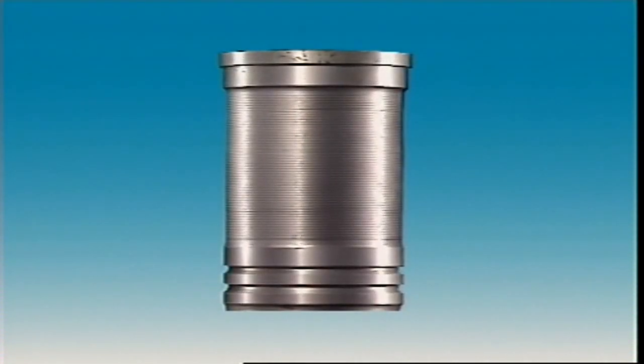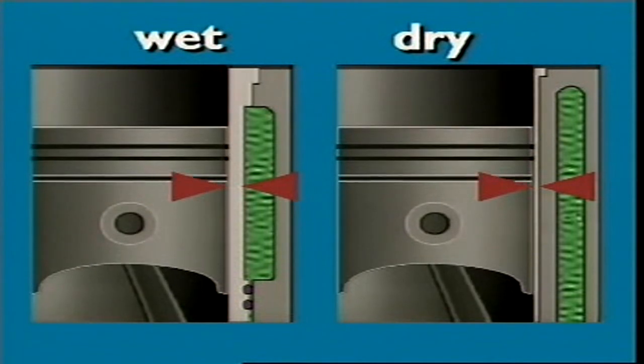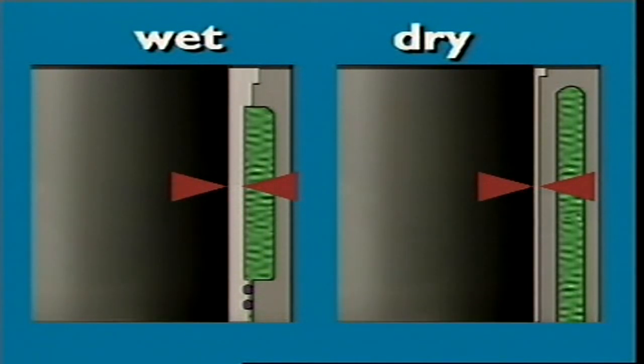The walls on wet sleeves are thicker than on dry sleeves. They don't have the same support from the block as dry sleeves, so they depend on the wall thickness to stop distortion.